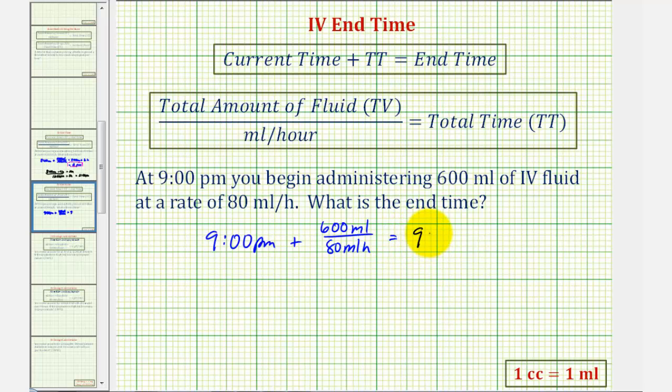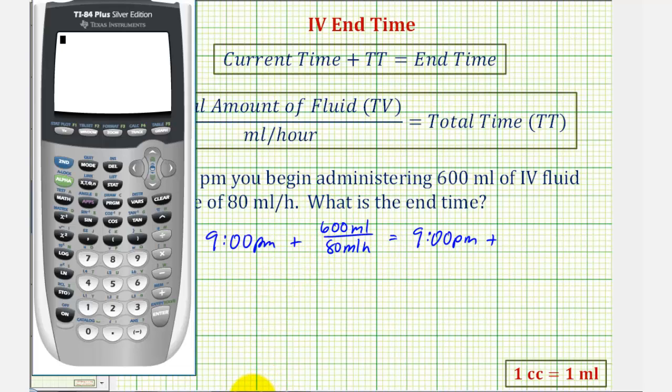So we'd have 9 p.m. plus this quotient here, which will be in hours. This would be 600 divided by 80. So we'll first use a calculator to find this quotient, and then we'll do it by hand. This would be 600 divided by 80, which would be 7.5. So this quotient is 7.5 hours.